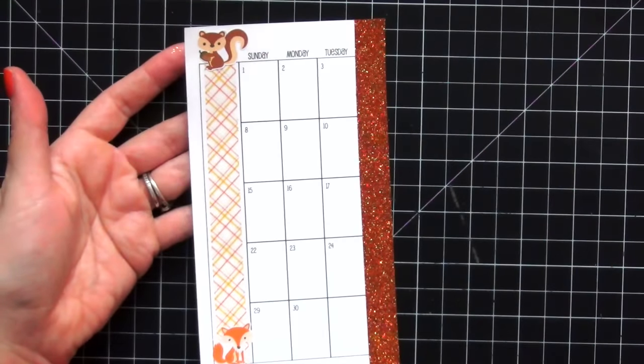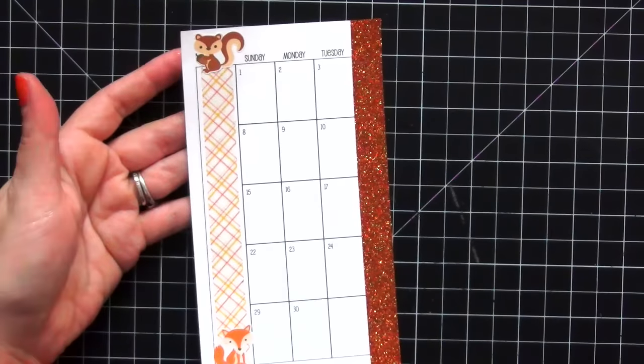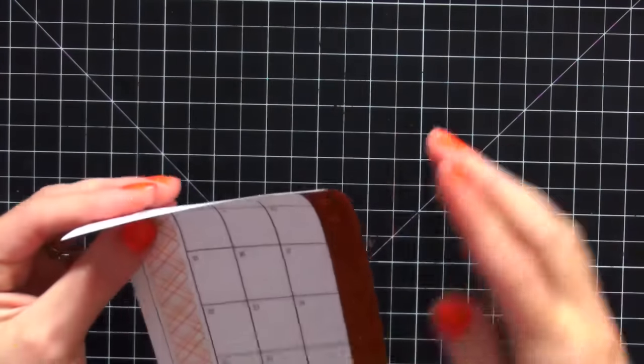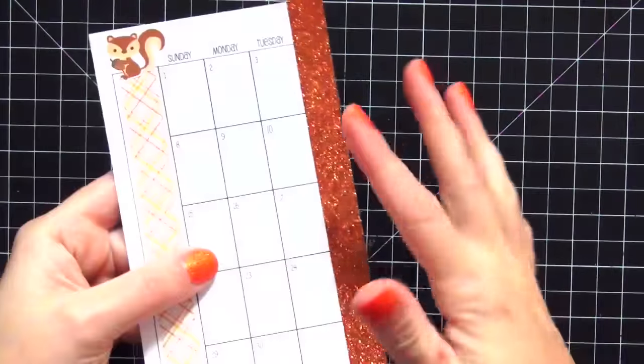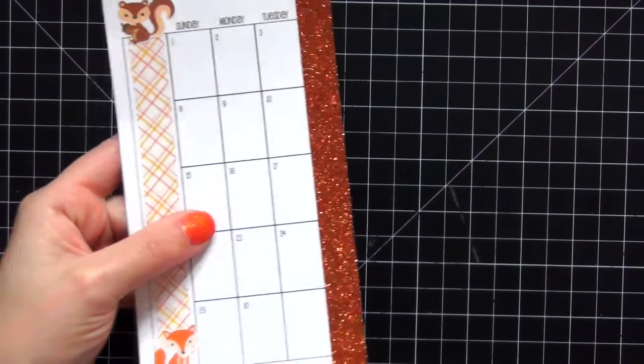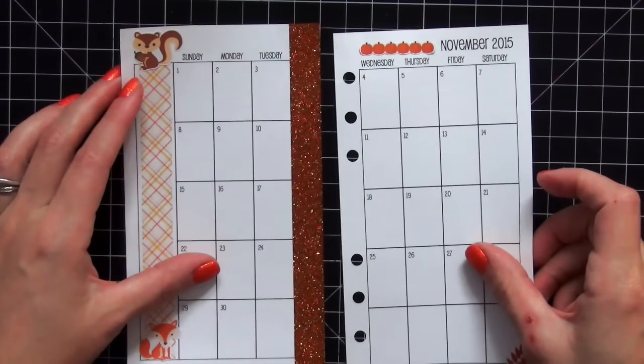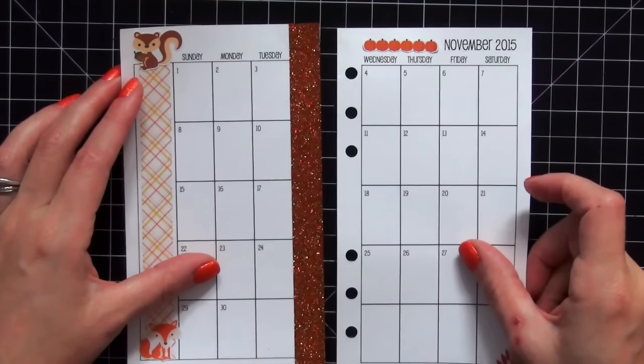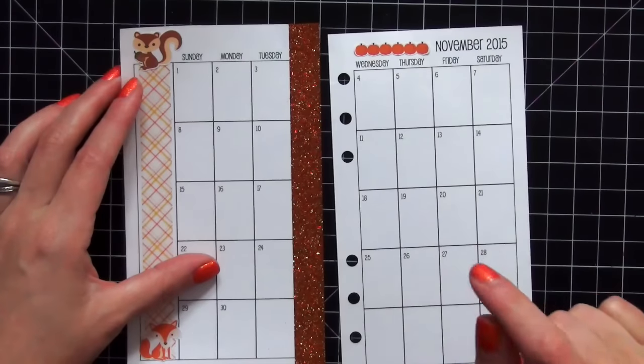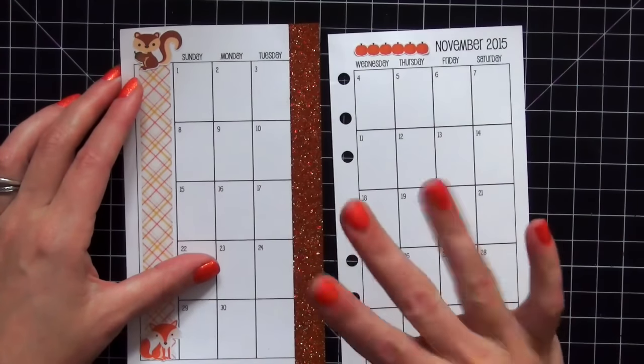So that's it, guys. I'm going to do that to both sides. I'm going to trim the extra off the edge. I'm going to re-hole punch it, and then I will have really beautiful Michaels glitter tape in my inserts for November. If you have any questions or comments, just let me know. Leave them below. Thanks so much for watching. Bye.